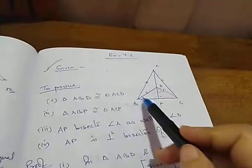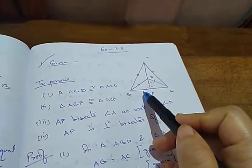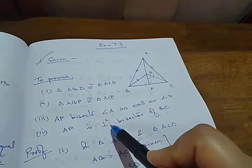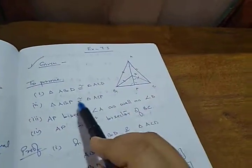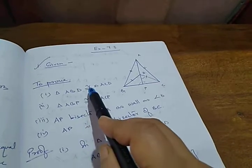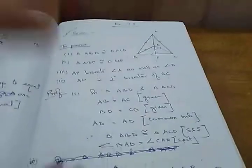Hence BP equals to CP, proved with the help of CPCT. Because it is a series of proofs — already I have told you — so whenever we prove the second one, we have to take the help of the first one. From this we are getting the conclusion that these two sides are congruent.